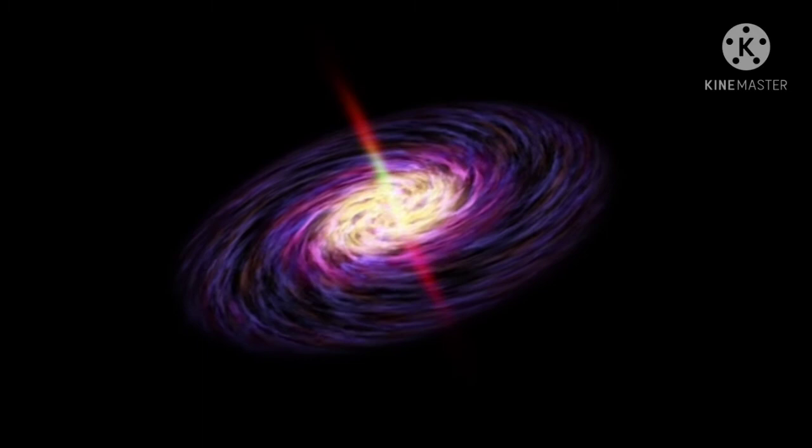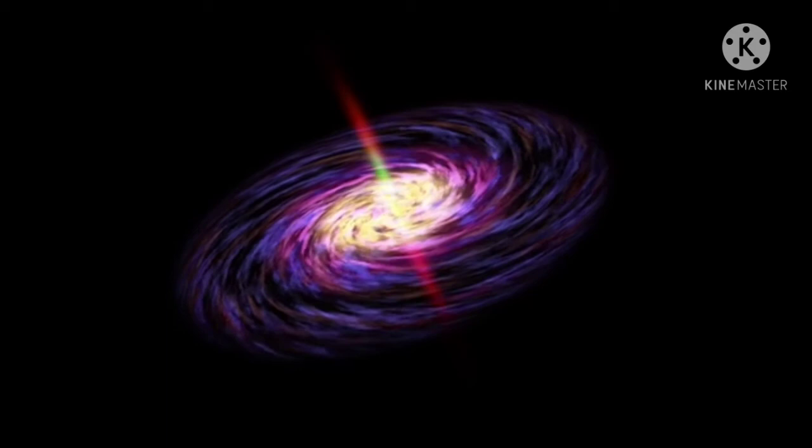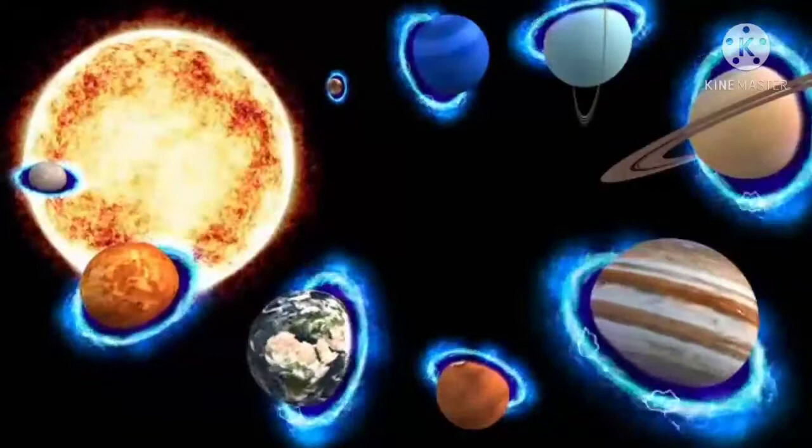Another kind of black hole is called stellar. Its mass can be up to 20 times more than the mass of the sun. There may be many stellar mass black holes in Earth's galaxy. Earth's galaxy is called the Milky Way.